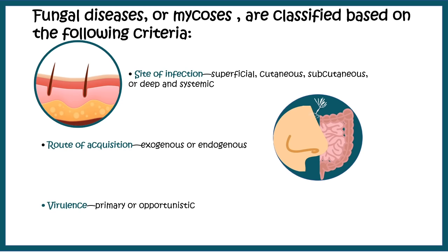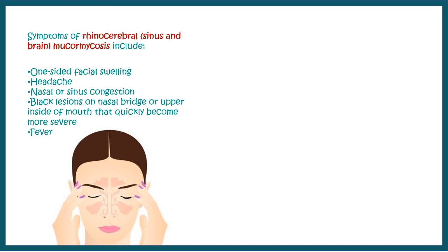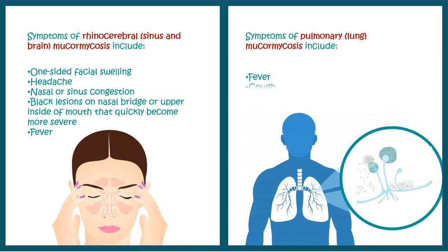As far as mucormycosis infection is concerned, there is rhinocerebral mucormycosis, which generally affects the sinuses and the brain. Its symptoms include one-sided facial swelling, headache, nasal congestion, jaw pain, and possibly fever.